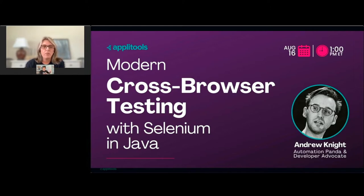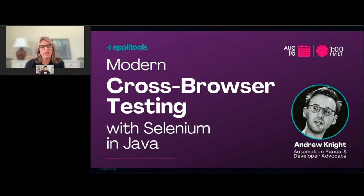He's a software quality champion who loves to help people build better quality software. In the past, he's built large-scale test automation projects that run continuously and reliably. Currently, as a developer advocate at Applitools, Pandy helps folks make their app visually perfect. He also serves as director of Test Automation University, which offers a multitude of free courses on software testing from the world's leading instructors.